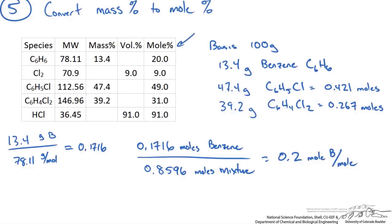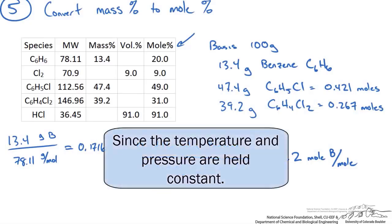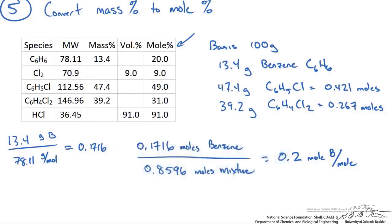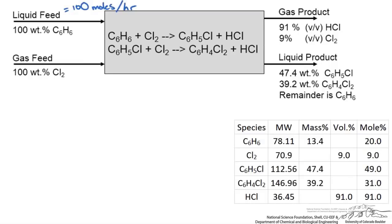This is for the liquid mixture. For the gas mixture, we need to assume some kind of gas law. Let's assume the ideal gas law is okay since we are operating at relatively near ambient conditions. With that assumption, we know that the volume fraction is the same as the mole fraction. So I have just copied over the volume fractions into the respective mole fractions for those two species. Now that we have our mole fractions and we assume the basis of 100 moles of benzene per hour coming in, we can write our extent of reaction equations for each species.